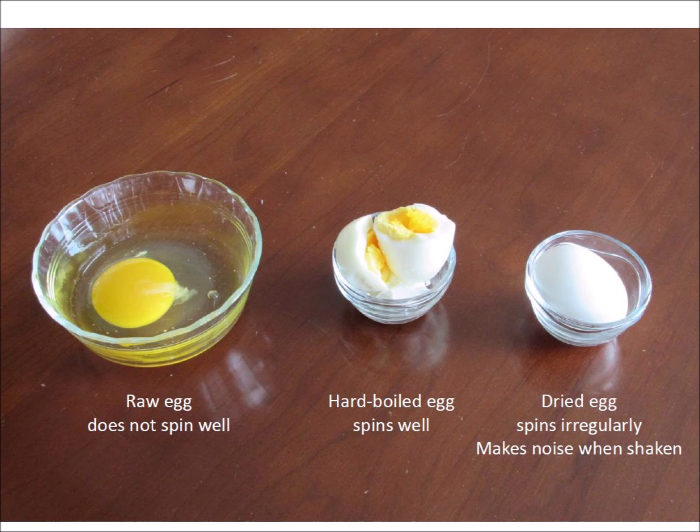Our experiment showed us that a raw egg does not spin very well, whereas a hard boiled egg spins very well. A dried egg is very light because all the water has evaporated and it spins irregularly. If the yolk is loose, a dry egg will rattle when shaken.